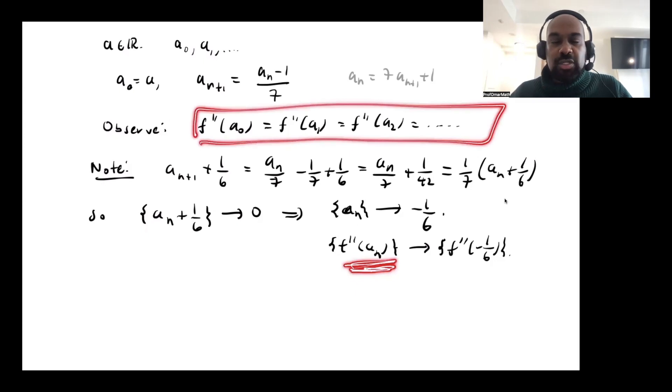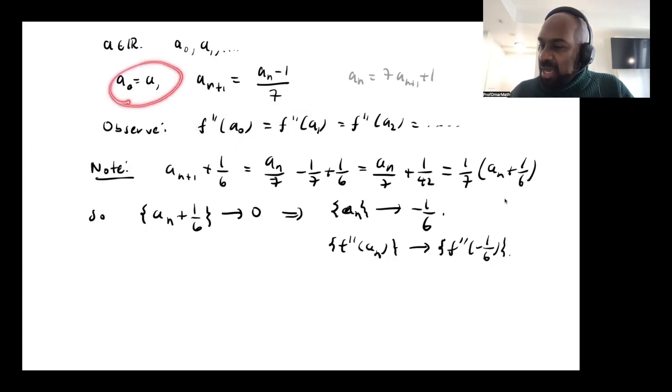We calculated that, and that's how we constructed this sequence in the first place. And they're all equal to f'' at a. So this implies that the second derivative of our function evaluated at a is actually the same as the second derivative evaluated exactly at negative 1/6. So the second derivative of this function is actually constant. And that's going to help us tremendously in determining what this function is.